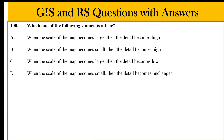Which of the following representations is true: when the scale of the map becomes large, the detail becomes high — this is true. When the scale becomes large, the detail becomes low — false. When the scale becomes small, the detail becomes unchanged — false. When the scale becomes large, the detail becomes large — the scale and the detail increase together.